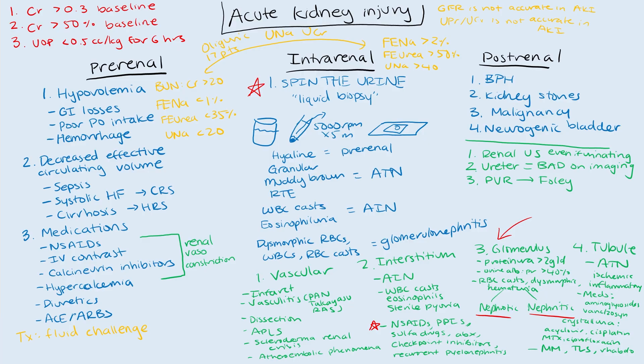In our previous video, we went over the evaluation of acute kidney injury and the three big buckets that you want to be considering, but there was one big category that we really didn't have time to explore. So we're going to do that in this video, and that's going to be glomerulonephritis — specifically the differentiation between nephritic and nephrotic syndrome. Let's get right into it.